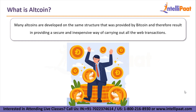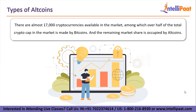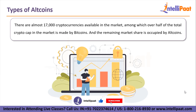Now let us take a look at the most famous types of altcoins. There are almost 17,000 cryptocurrencies available in the market, among which over half of the total crypto market cap is made up by Bitcoin. The remaining market share is occupied by altcoins. Let us take a look at some of the most popular altcoins available in the market that are occupying most of those remaining shares.